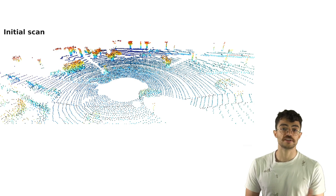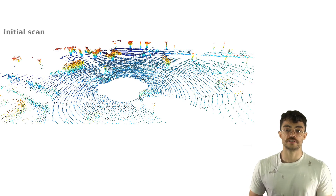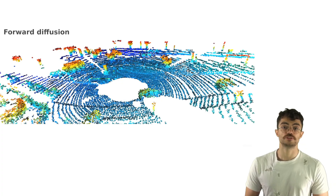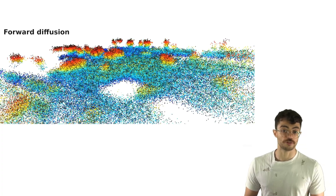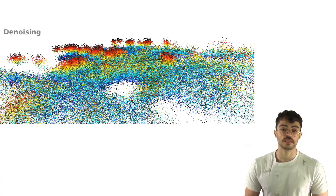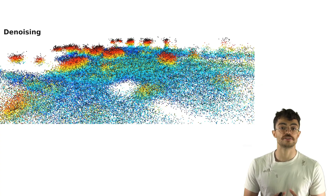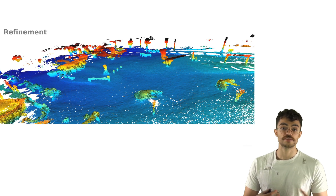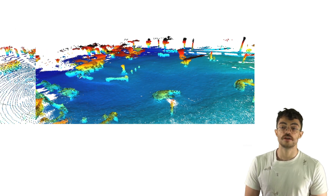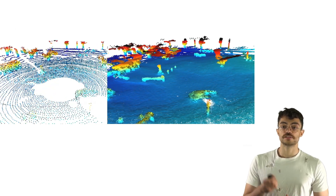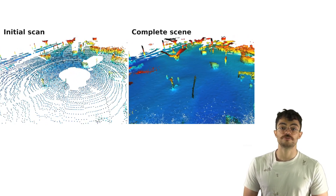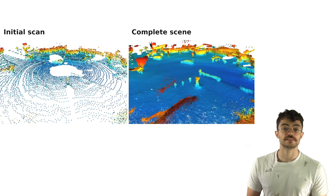Here you can see how it works. We start from a single LiDAR scan, sample the noise around each point individually and add it to the data. Then we use the noise predictor to predict the noise added and step by step remove it from the data. Then we use the local upsampling network to densify this prediction, arriving at a dense and complete scene representation from a single LiDAR scan.